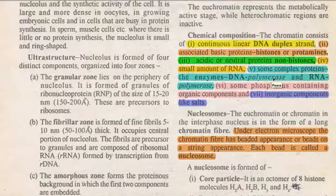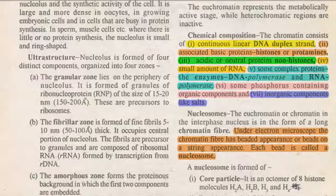A small amount of RNA may also be present. Complex proteins involved in transcription and translation, such as DNA polymerase — involved in replication — and RNA polymerase — associated with transcription — are also present. Additionally, phosphorus-containing organic compounds and inorganic components like salts are present in this region.